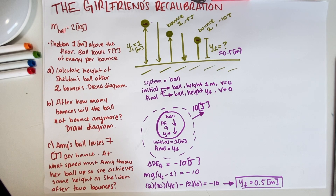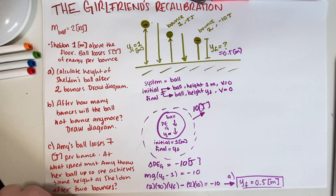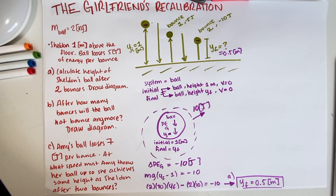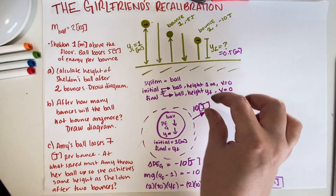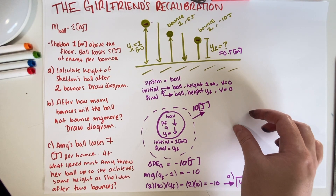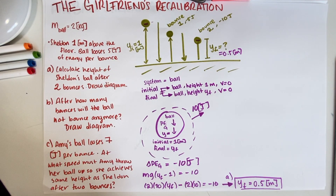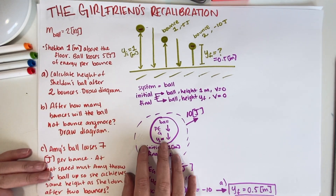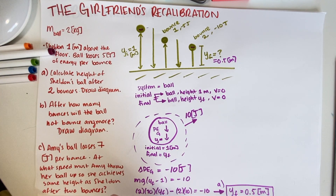Alright, so that was part A. Now part B is asking: after how many interactions with the floor will the ball no longer bounce back up? Draw an energy interaction diagram as your explanation. This one is fairly straightforward because if it loses a fixed amount of energy per bounce, it's a linear function, and we're already halfway there at two bounces — so at four bounces we won't go back up. But we still have to draw the energy interaction diagram.